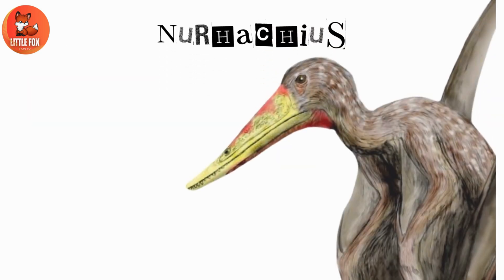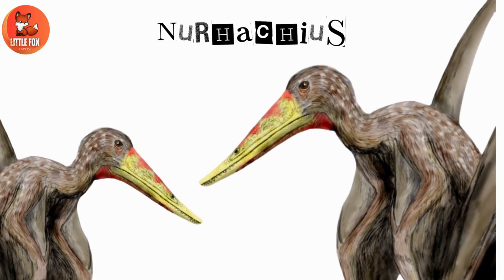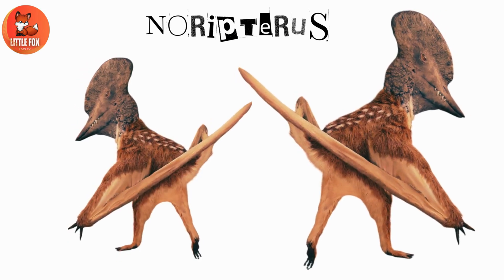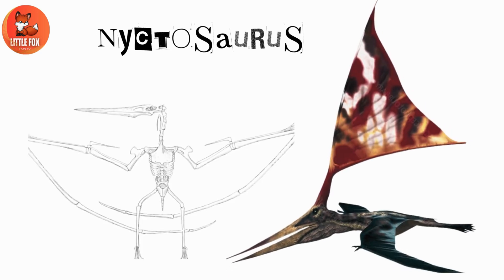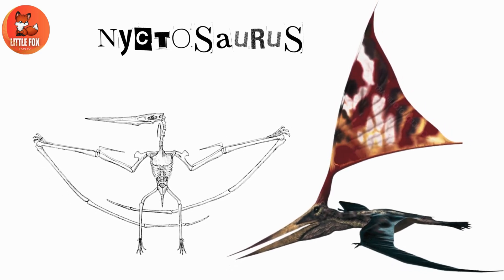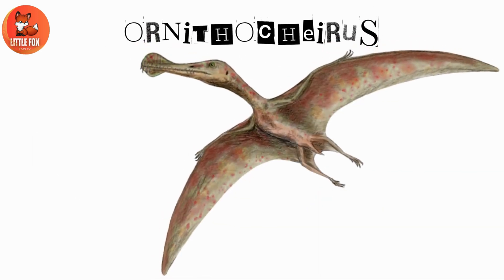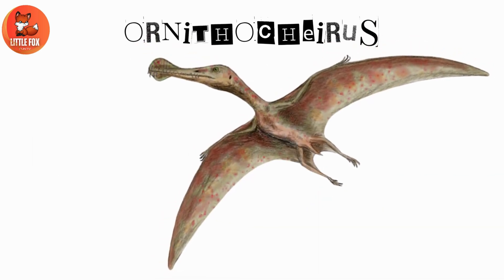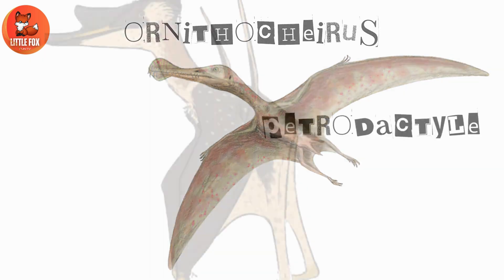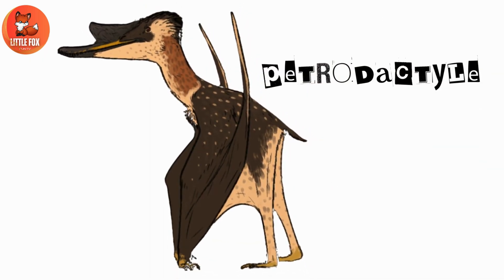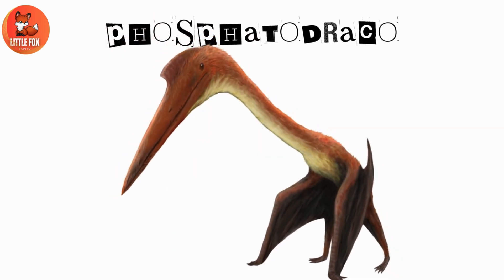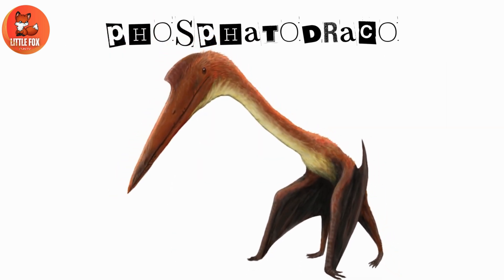Number 71: Neurochias. Number 72: Norypterus. Number 73: Nictosaurus. Number 74: Ornithochiris. Number 75: Petrodactyl. Number 76: Phosphatodraco.